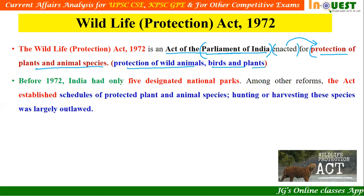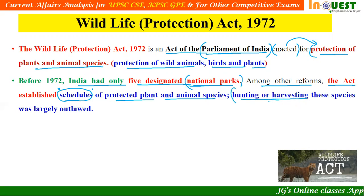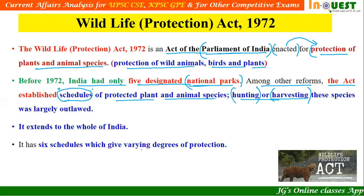Before 1972, India had only five designated national parks. Among other reforms, the act established various schedules — there are six schedules under this particular act. The purpose of these schedules is to offer protection to plants and animal species, and some schedules prohibit hunting and harvesting of special species. This act extends to the whole of India and gives varying degrees of protection through its six schedules.